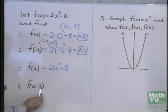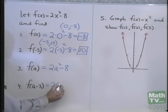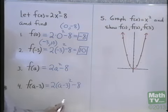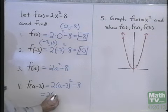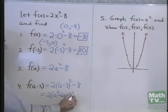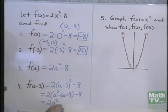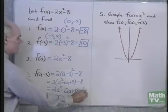How about f(a-3)? Well, in this case, x is a minus 3, so f(a-3) is 2 times (a-3) quantity squared minus 8. Now, this I can simplify by multiplying 2 times a squared minus 6a plus 9 minus 8.